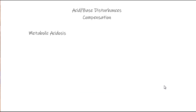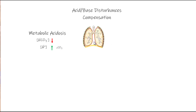If our primary problem is a metabolic acid-base imbalance, then our lungs can assist us. With a metabolic acidosis, the primary problem is a relative deficiency of bicarb, or a relative excess of hydrogen ions or CO2. What the lungs can do to help in this situation is to increase minute ventilation. This allows us to blow off CO2, which helps to decrease hydrogen ions.